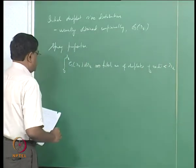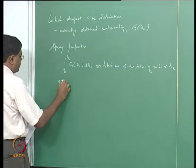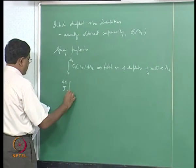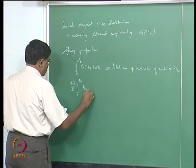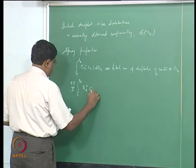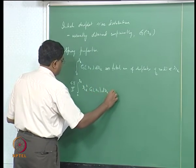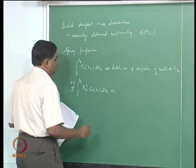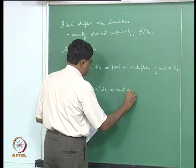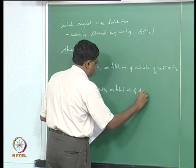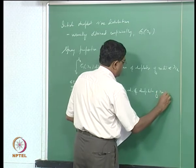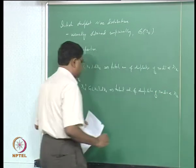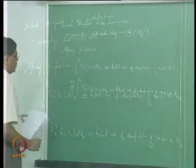You can also look at the volume: (4/3)π times the integral from 0 to R_L of R_L³ g(R_L) dR_L gives the total volume of droplets of radii less than R_L. Many times we use a quantity called the Sauter Mean Diameter, or SMD.